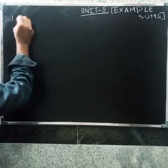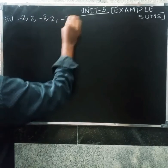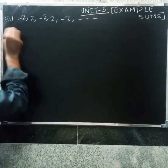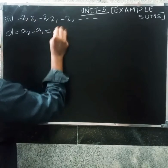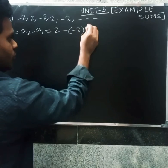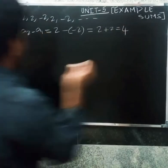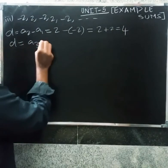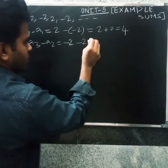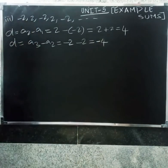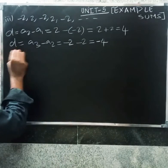Third example: the sequence has differences minus 2 and minus 2. The A3 order value is minus 2; again minus 2, so we get minus 4. The difference in our order gives minus 4, therefore the given sequence is not an AP.